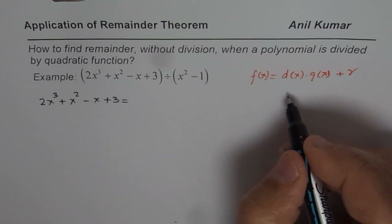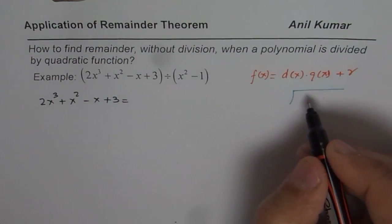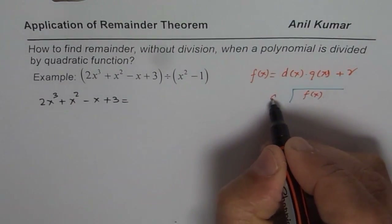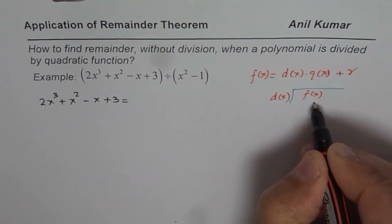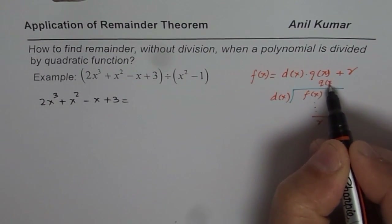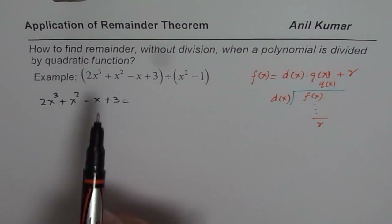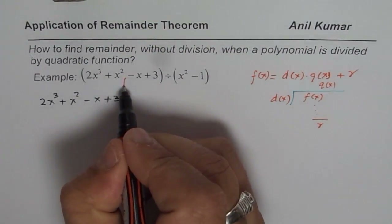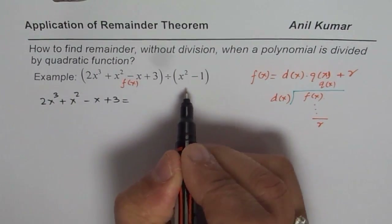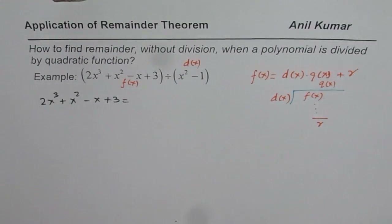What are the divisor, quotient, and remainder? If you divide a function f(x) by the divisor d(x), then you will get some remainder and some quotient, and that is how they are related. In our case, the function is 2x³ + x² - x + 3, and the divisor is x² - 1.